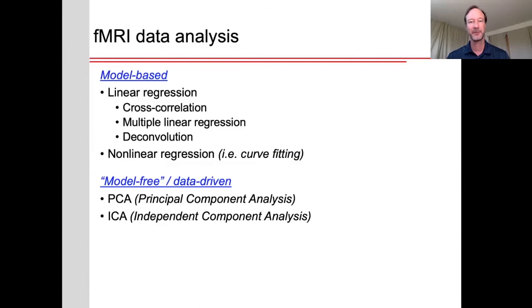There's a number of different approaches we can use to analyze our fMRI data. In general, these can be broken down into two broad classes: model-based techniques that include linear regression, which can have names such as cross-correlation or multiple linear regression or deconvolution, or nonlinear regression that is curve fitting. Or we can do model-free or data-driven approaches like principal components analysis or independent component analysis. The differences between these approaches is really what assumptions you're willing to make.